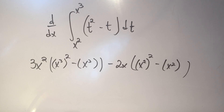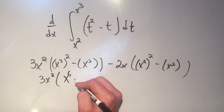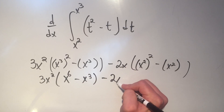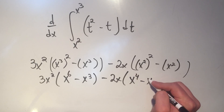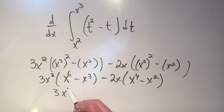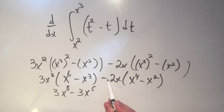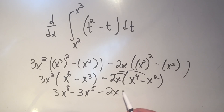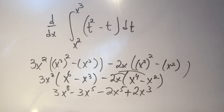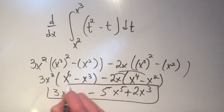I'd want to clean that up a bit. x cubed squared — when you have an exponent to an exponent, you multiply them — gives x to the sixth. And x squared squared is x to the fourth. Distributing: 3x² times (x⁶ minus x³) gives 3x⁸ minus 3x⁵. Distributing the minus 2x term: minus 2x⁵ plus 2x³. Combining like terms: 3x⁸, then minus 3x⁵ minus 2x⁵ gives minus 5x⁵, minus 3x³ plus 2x³ gives minus x³ — and that would be your answer.